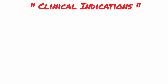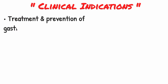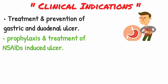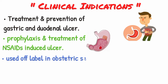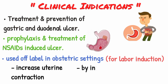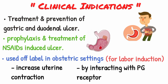Misoprostol is indicated in the treatment and prevention of gastric and duodenal ulcers, and also used in prophylaxis and treatment of NSAID-induced ulcers. It is also used off-label in obstetric settings for labor induction, since it increases uterine contraction by interacting with the prostaglandin receptor in the uterus.